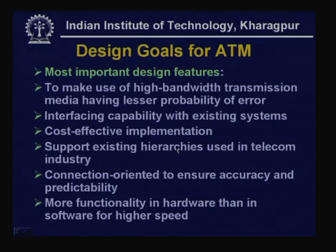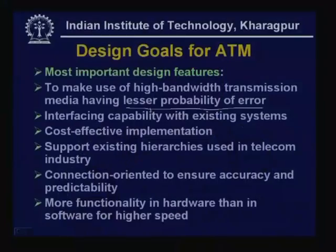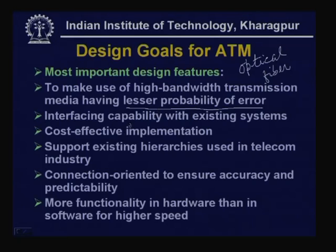The most important design features of ATM include: it makes use of high-bandwidth transmission media with lesser probability of error. Earlier protocols like X.25 and frame relay used lower-bandwidth media such as twisted pair or coaxial cable. ATM uses optical fiber, which has very high bandwidth and a much reduced probability of error, so transmitted frames are less prone to error.